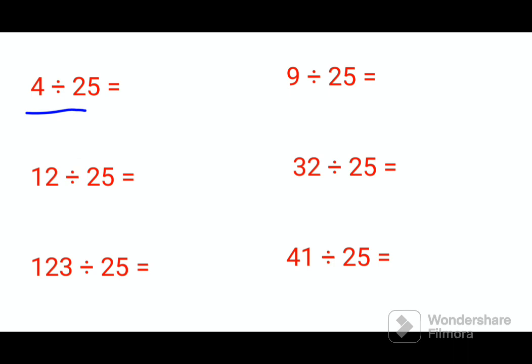So here we have 4 divided by 25. All you have to do is multiply both of these numbers by 4. So what happens is you get 16 upon 100. When you divide this number or any number by 100 it becomes very easy because your final answer comes out to be 0.16.